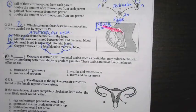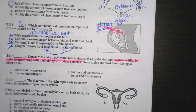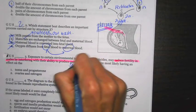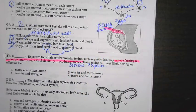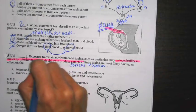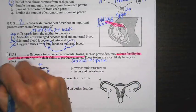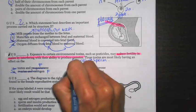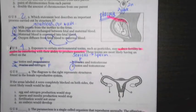Exposure to certain environmental toxins, such as pesticides, may reduce fertility in males by interfering with their ability to produce gametes. Remember, gametes is going to be a fancy word for sex cells. And if we're talking about males, we're talking about sperm. These toxins are most likely having an effect on the blank. So we're looking for the male. Number one says testes and progesterone. Progesterone is considered a female hormone, so we can cross that one off. Ovaries and estrogen, those actually are both associated with the female. Cross those ones off. Number three says ovaries. Again, female, cross that one off. And then testes and testosterone are both male. So that's going to be our best answer choice.